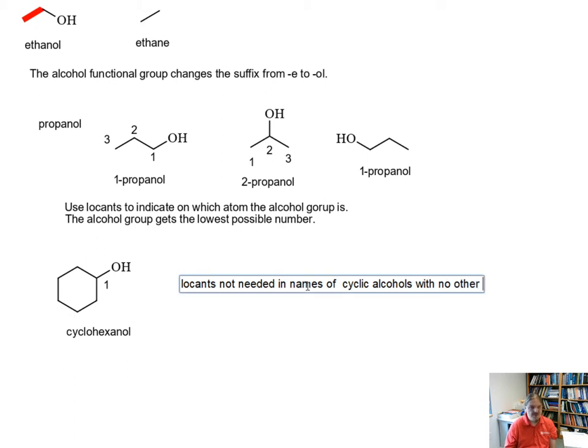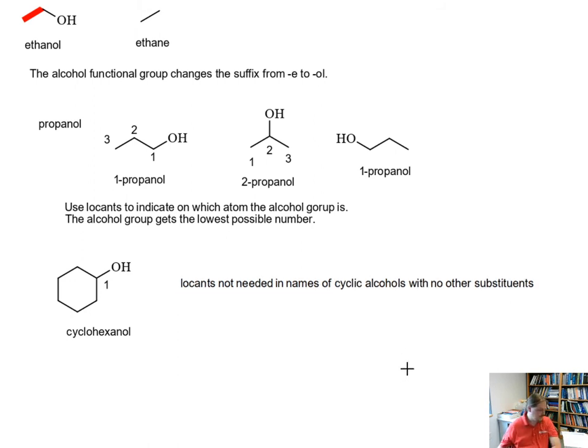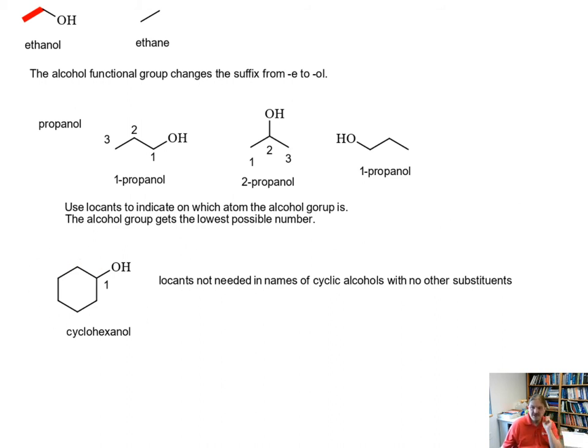We're going to do this example a little bit later in another video, where we have a more complex structure, and we are going to need to use locants. But in the case of cyclohexanol, there's no other way we could put the alcohol in any other carbon on the cyclohexane ring, and it's still one cyclohexanol.